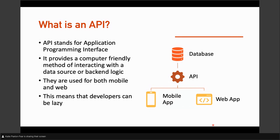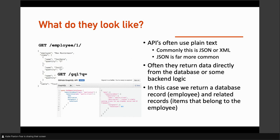So what do they look like? Often, APIs use plain text because they're for computers, not really designed for humans. With that, you see these two types of data: JSON and XML. JSON is far more common now, but XML used to be really common in the past. As you can see here, this is an example of JSON — and again, they return data directly from the backend, the database, or some backend logic. So what we really have to do is return records.